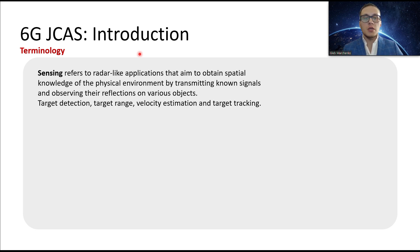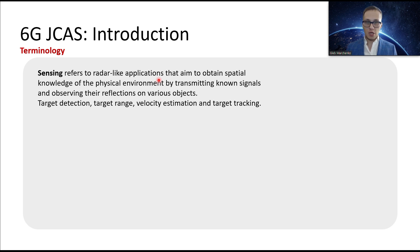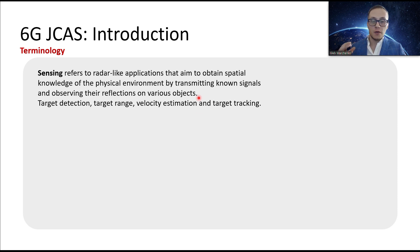In our case, in case of wireless technologies, sensing refers to radar-like applications — to transmit special signals and receive their reflections to understand partial knowledge of the physical environment. Because reflections, scattering, and multipath environment could be a very good source of information.